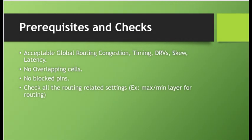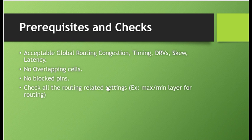Before we start the routing, there are certain prerequisite checks we should do. First, we should check that the congestion, timing, DRC, and LVS numbers are acceptable — because if they are not, they are only going to get worse post routing. Another thing is there should not be any overlapping cells in the design, because if cells are overlapping their pins will also overlap and the routing tool will not be able to access the pins properly. Also, there should not be any blocked pins, as the routing tool will not be able to route from pin to pin. All routing-related settings — for example, the minimum and maximum layer for routing, and whether routing should be timing-driven or congestion-driven — should be checked before we start the routing.